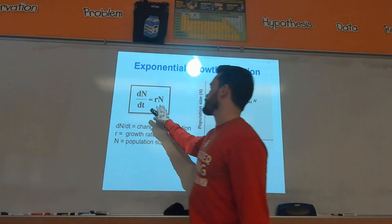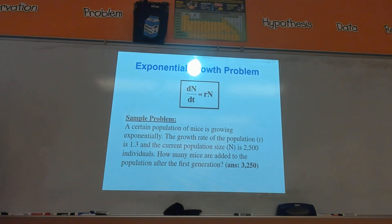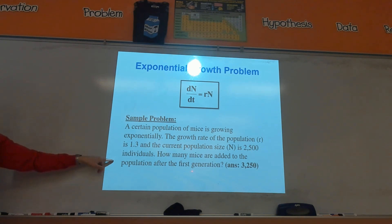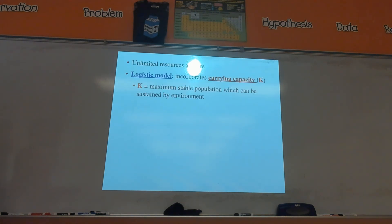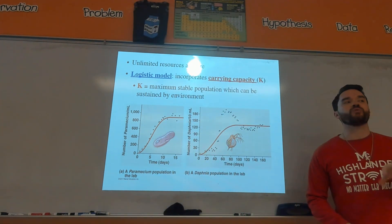Here's the formula for exponential growth — it's on your formula sheet and the variables are defined for you there. If they ask you to do calculations with it, it's really just a plug-and-chug problem. For example: a population of mice is growing exponentially, growth rate R is 1.3, and the current population N is 2,500. How many mice are added after the first generation? You would do 1.3 times 2,500 to get your answer. Exponential growth is very rare in a real population.